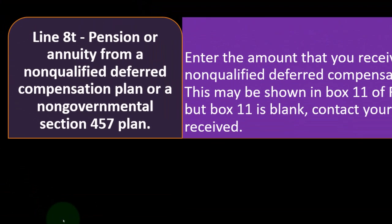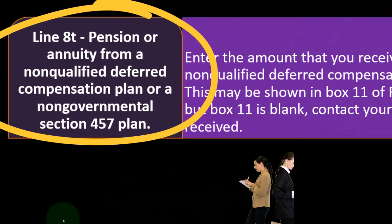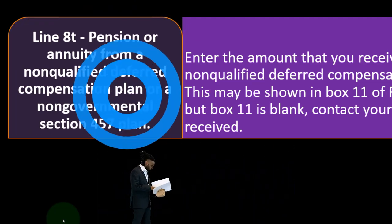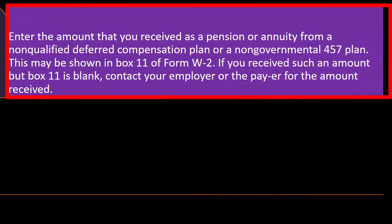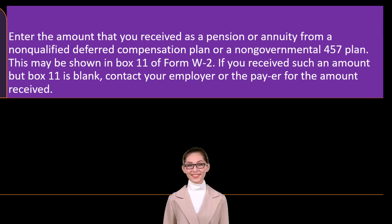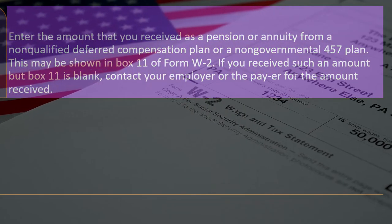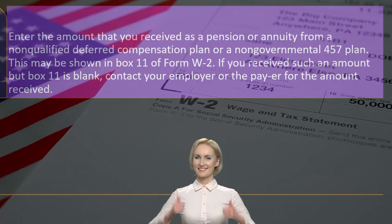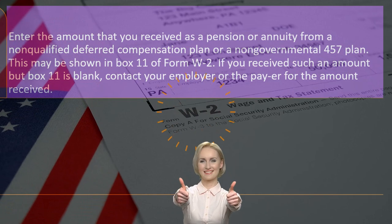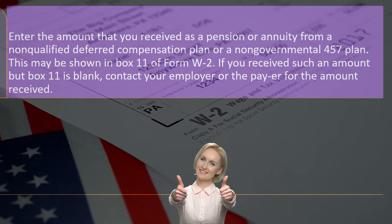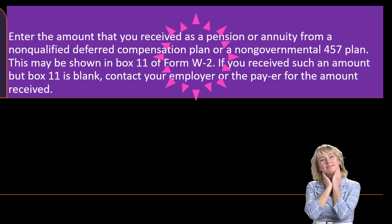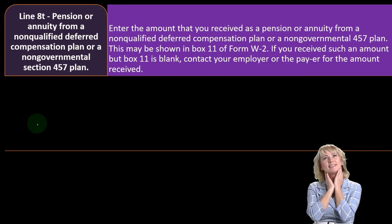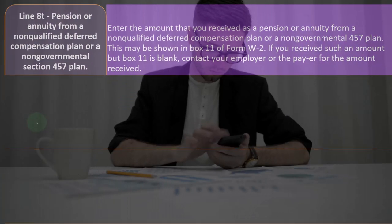Line 8T — pension or annuity from a non-qualified deferred compensation plan or a non-governmental Section 457 plan. Enter the amount you received as a pension or annuity from such a plan. This may be shown in box 11 of Form W-2, making it fairly straightforward to populate into most software. If you received such an amount but box 11 is blank, contact your employer or the payer for the amount received.